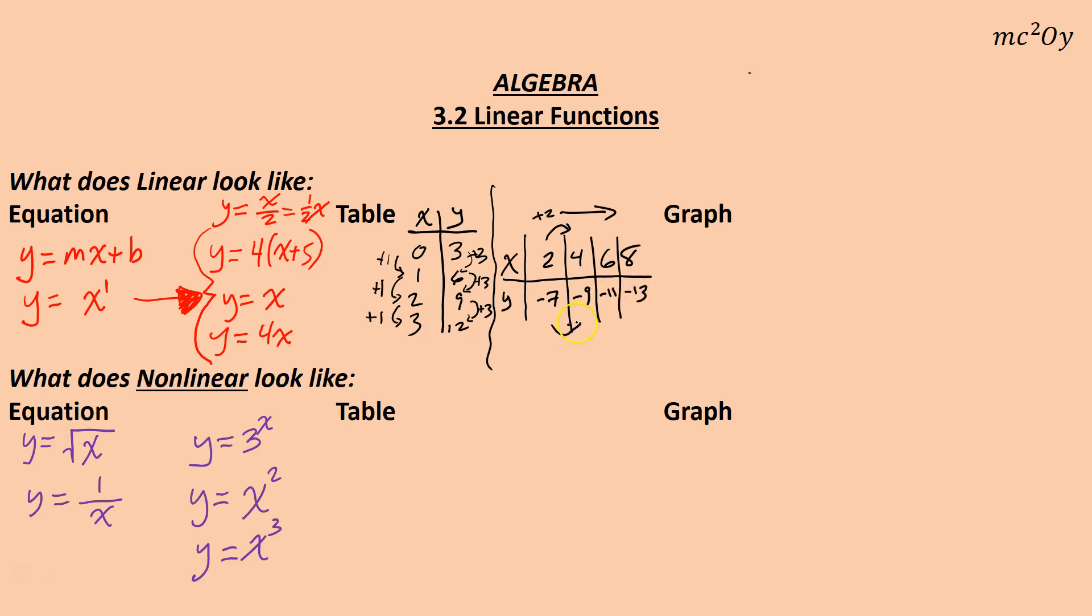And then maybe y is starting at seven, or negative seven even, and maybe it's going down two every time. Now, usually when you get into algebra, we don't start saying, well, we're subtracting two. We're actually adding a negative two. We're adding a negative two each time here. Which really just means you're going down two each time. We just usually start talking about addition rather than subtraction.